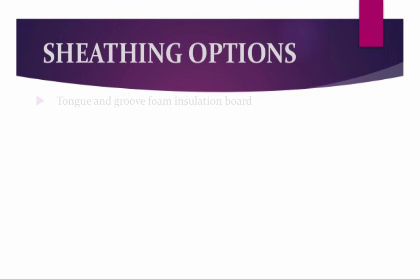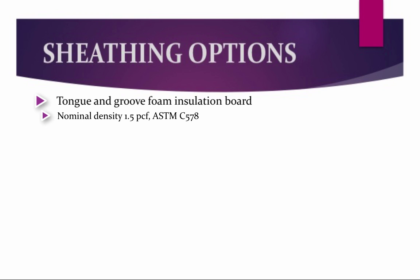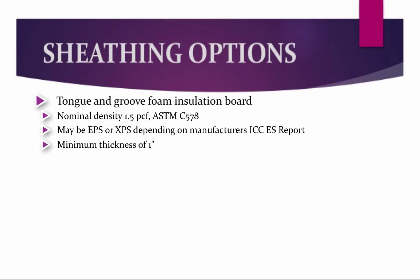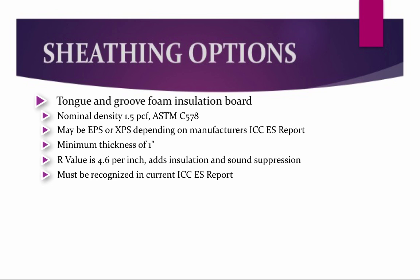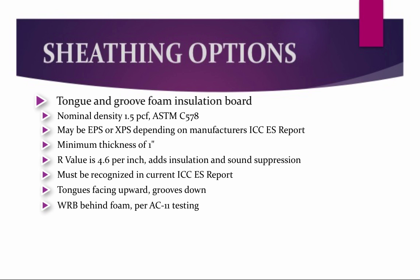Sheathing options are as follows. Tongue and groove foam insulation board is an excellent sheathing option. It has a nominal density of 1.5 pounds per cubic foot and is manufactured to ASTM C578. Foam insulation board may be EPS (expanded polystyrene) or XPS (extruded polystyrene) depending on the manufacturer's ICC-ES report. When used as sheathing, it has a minimum thickness of one inch. R-value of EPS is 4.6 per inch. It adds insulation and aids in sound suppression. Any foam sheathing board used must be recognized in a current ICC-ES report. When installed as sheathing, the tongue should face upward and groove downward to create a shingle pattern to aid in watershed. The weather-resistive barrier shall always go behind the foam per AC11 testing.